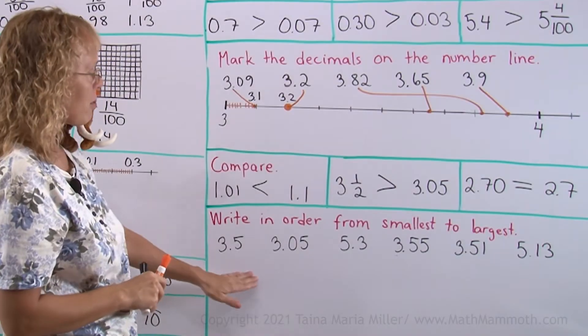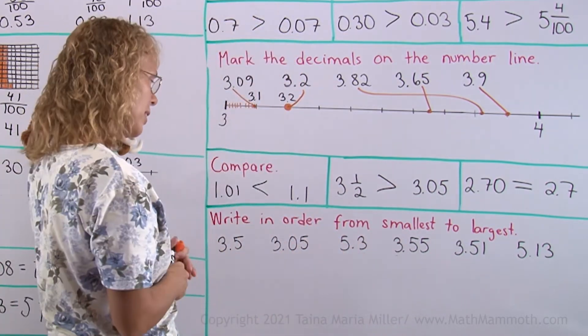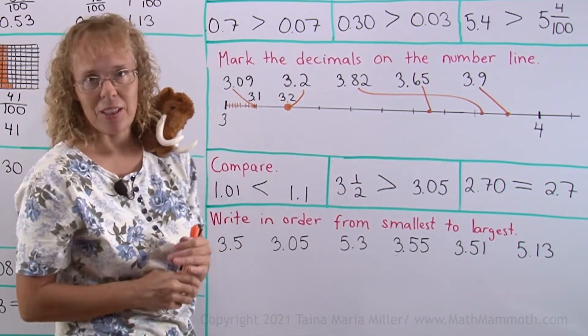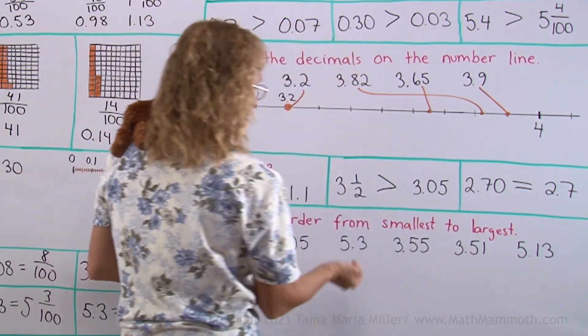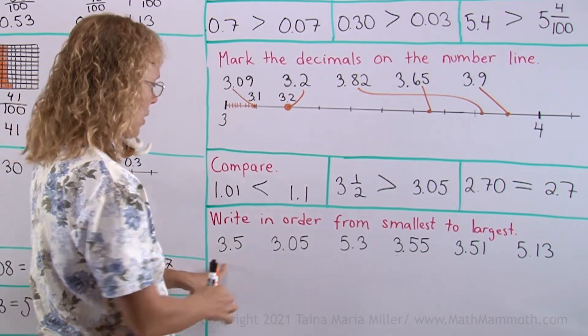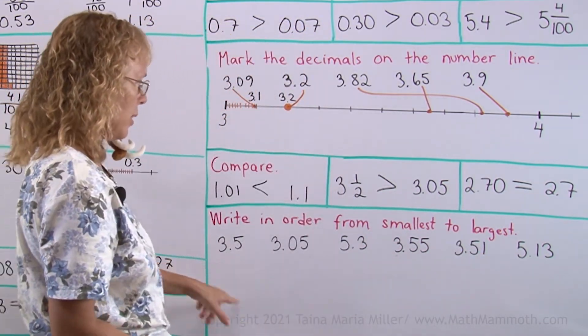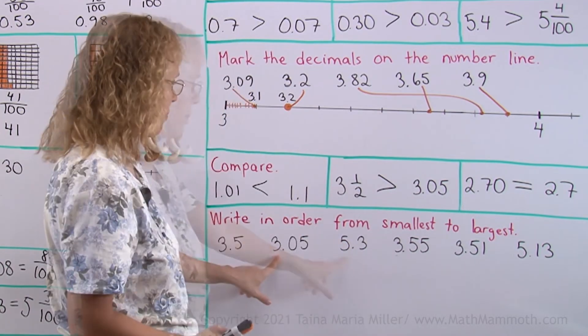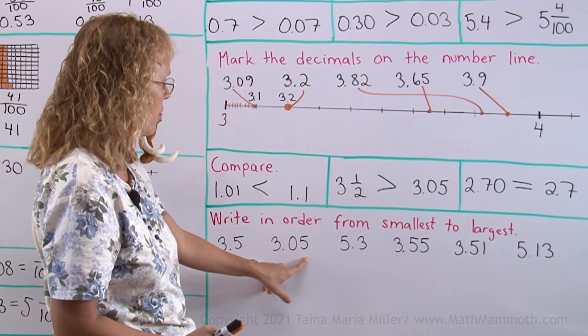Let's first see if we can pick the smallest number. The 3 point somethings and 5 point somethings. So it's one of these that starts with 3. 3 and it's not going to be 3.5 anything. This one here has 0 tenths and 5 hundredths.